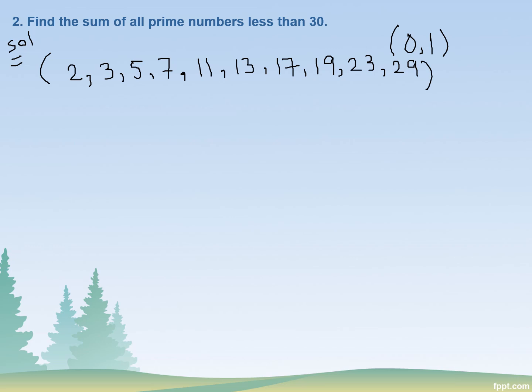We just need to sum these up, that means we have to add all of these and we will get the answer for our question. 2 plus 3 plus 5 plus 7 plus 11 plus 13.